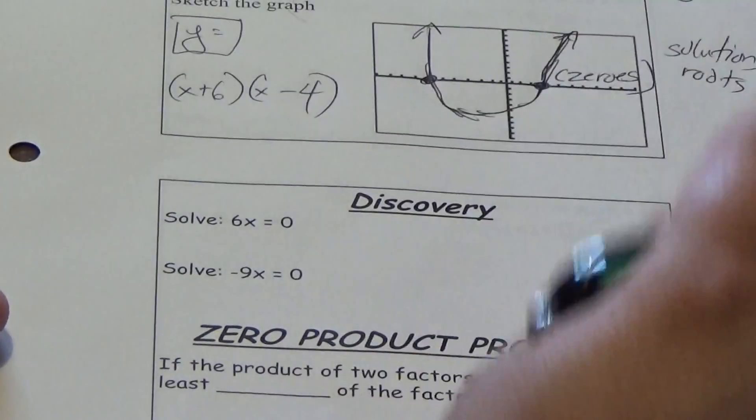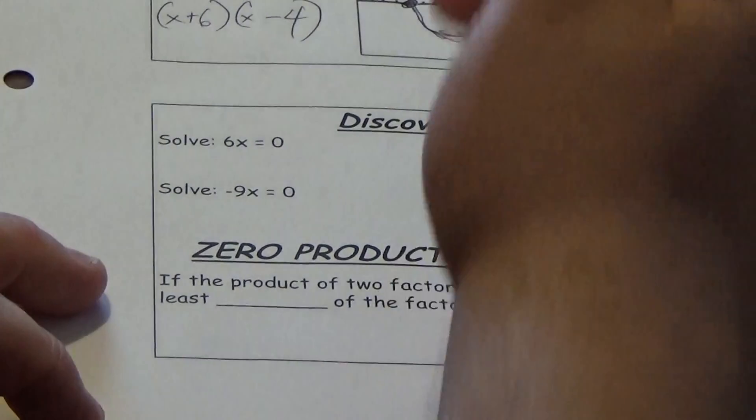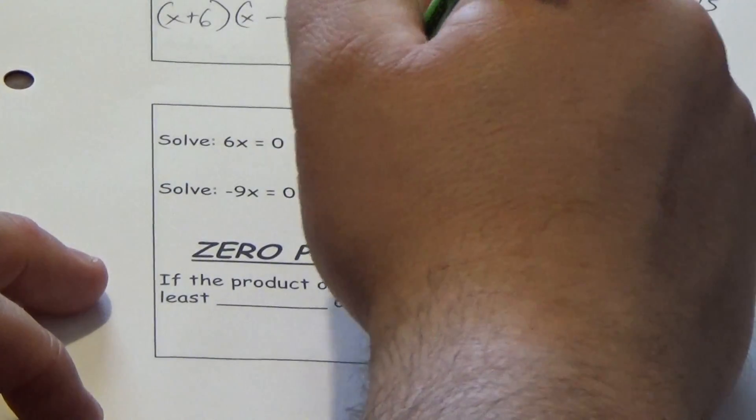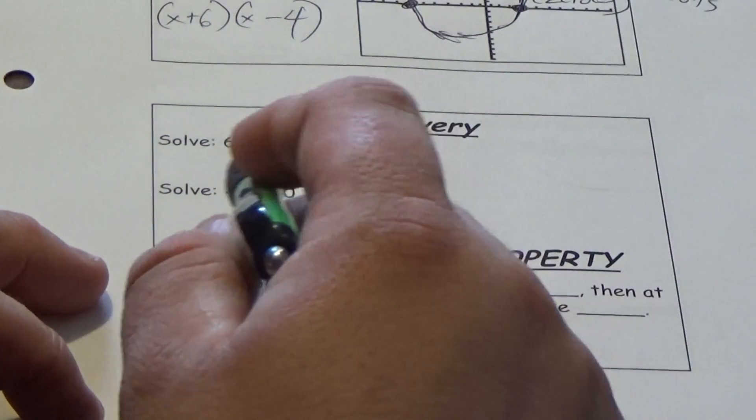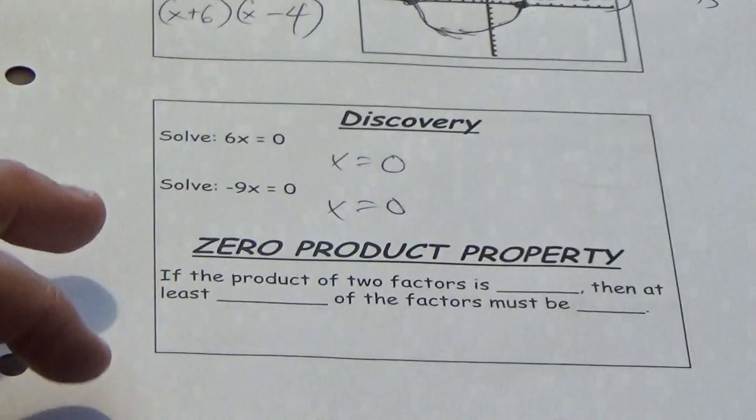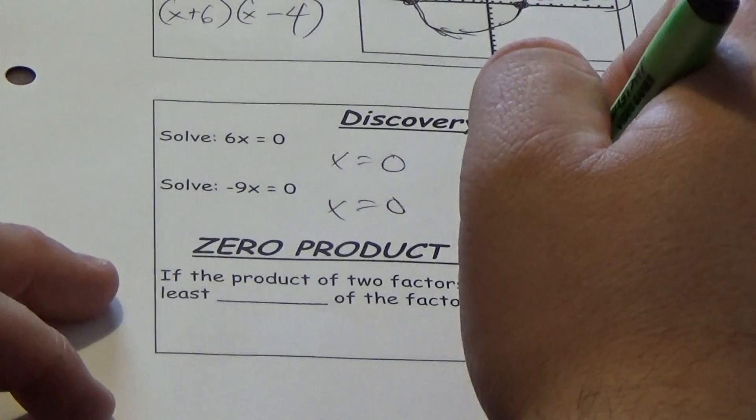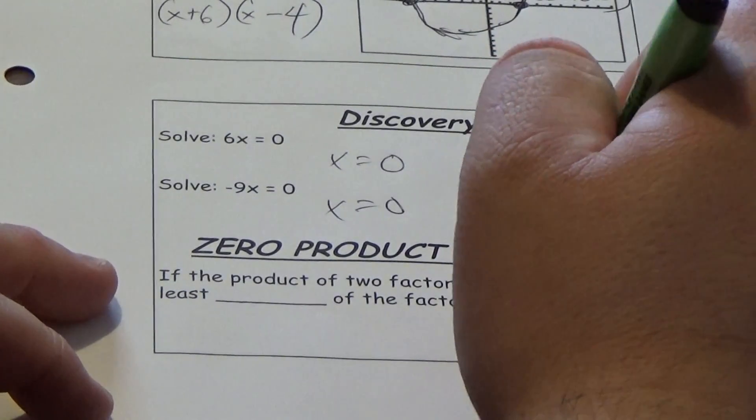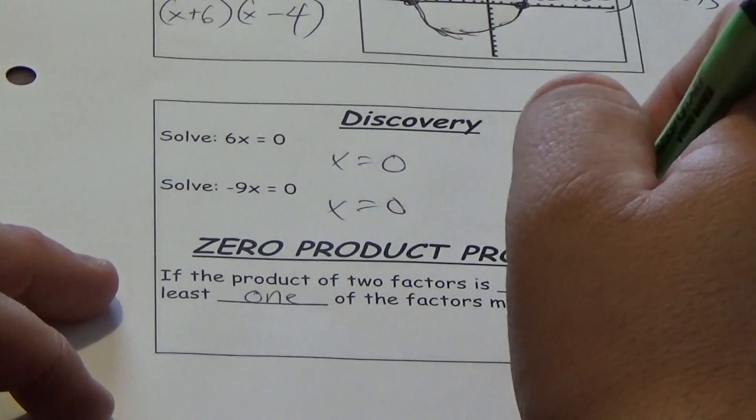If we try to set 6x equal to 0 and divide by 6, we get x equals 0. If we try to set negative 9x equal to 0 and divide by negative 9, we get x equals 0. So if the product of two factors is 0, then at least one of the factors must be 0.